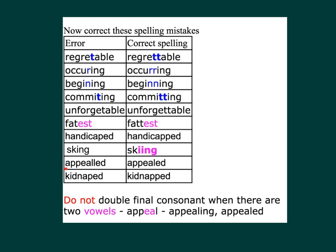Error: A-P-V-E-A-L-L-E-D → Correct spelling: A-P-P-E-A-L-E-D, appealed. Error: K-I-D-N-A-P-E-D → Correct spelling: K-I-D-N-A-P-P-E-D, kidnapped.